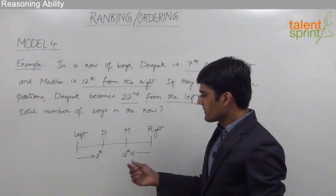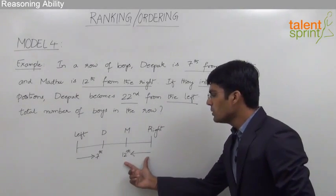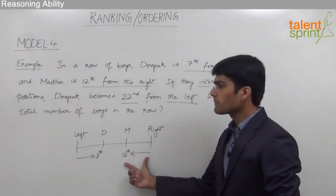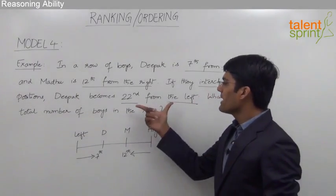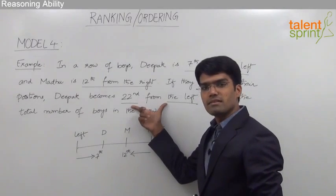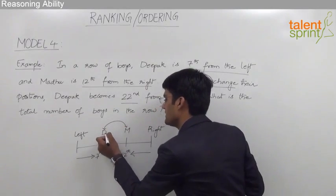As given in the question, we know that Deepak is 7th from the left end and Madhu is 12th from the right end. But when they interchange their positions, Deepak becomes 22nd from left. As we can understand that when these two persons interchange their positions,